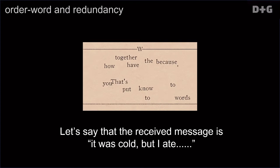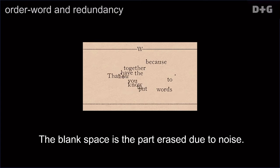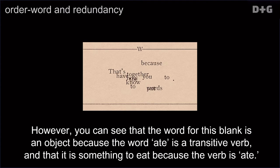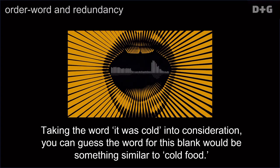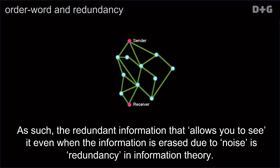Let's say that the received message is [incomplete]. However, you can see that the word for this blank is an object because the word "ate" is a transitive verb, and there is something to it because the verb is "ate." Taking the word "it was cold" into consideration, you can guess the word for this blank would be something similar to cold food. As such, the redundant information that allows you to see it even when the information is erased due to noise is redundancy in information theory.